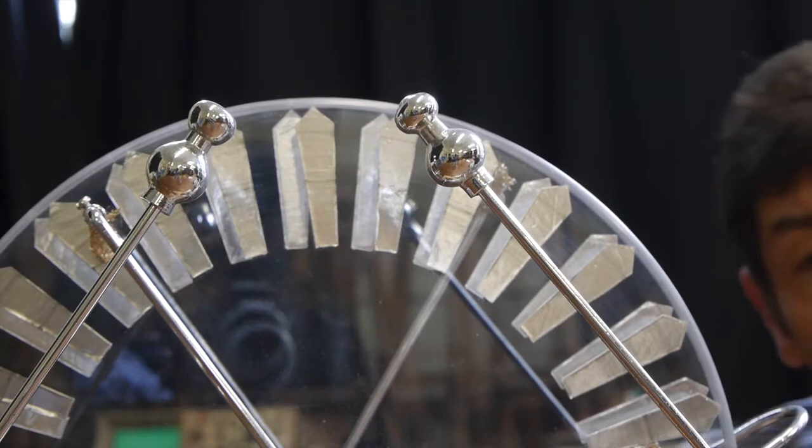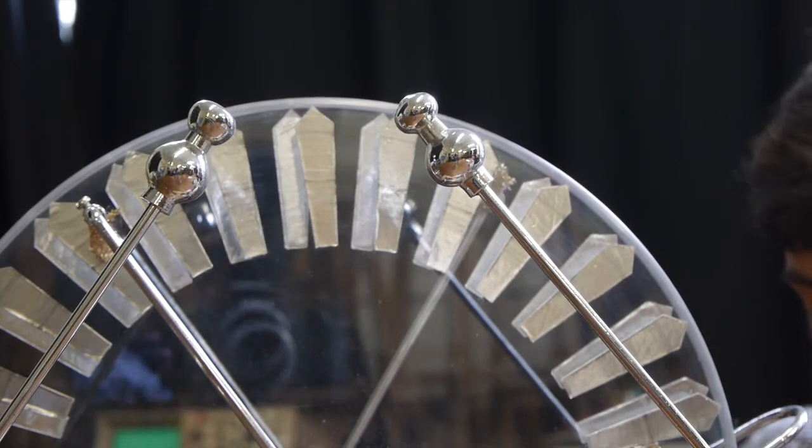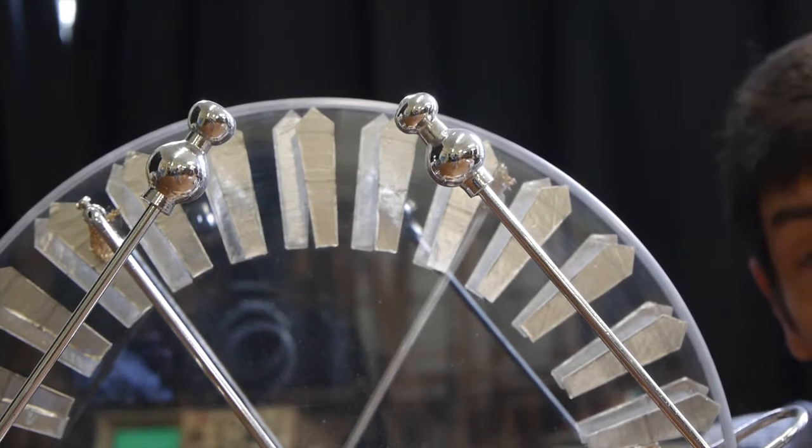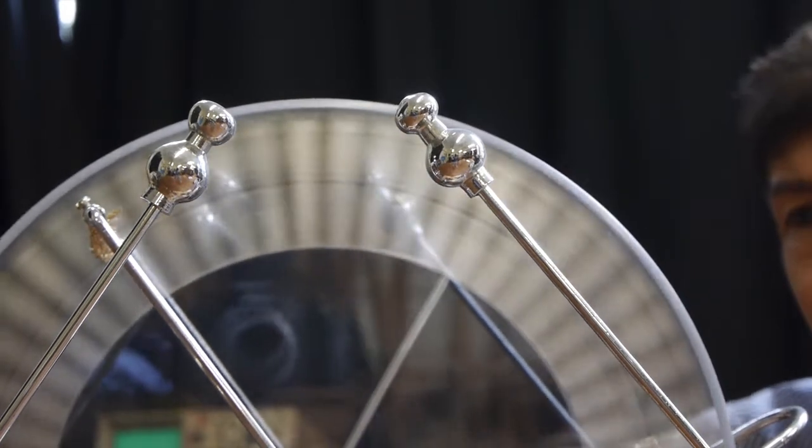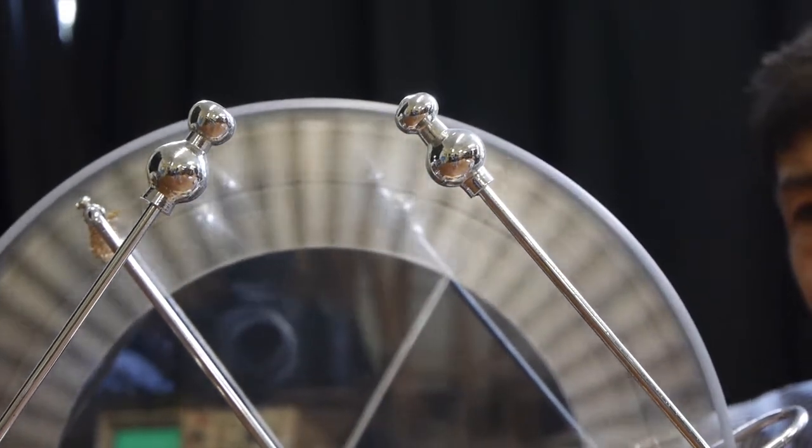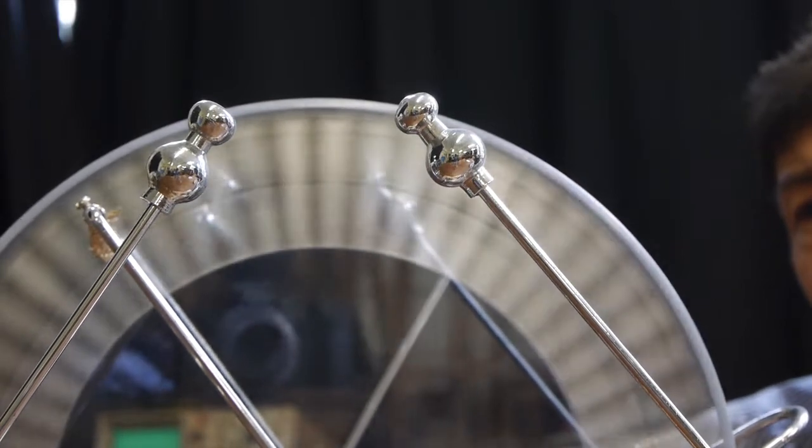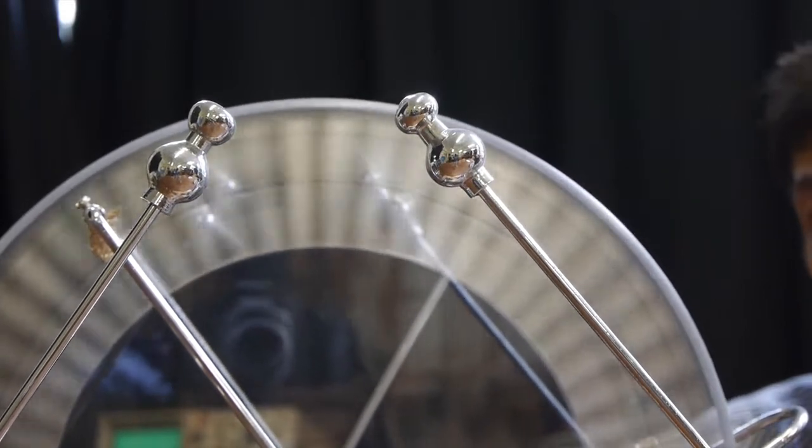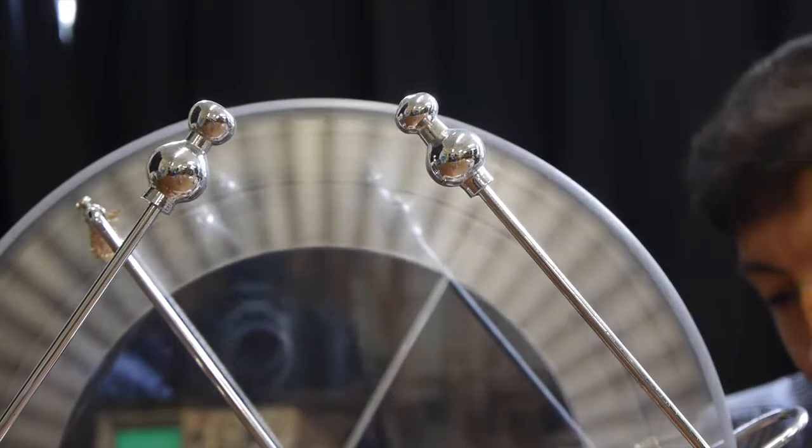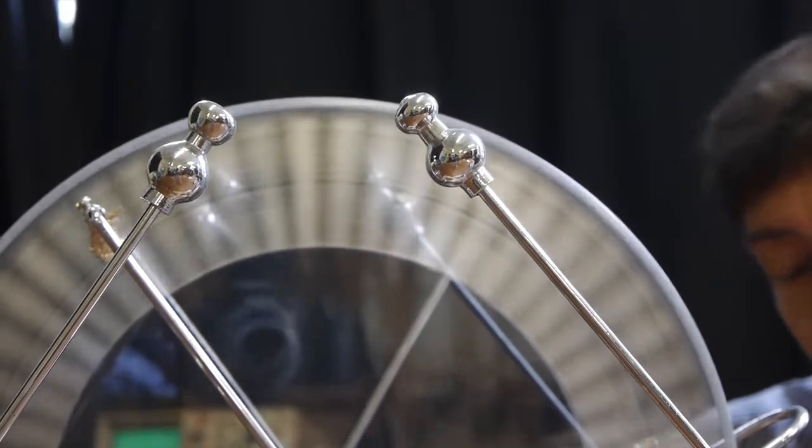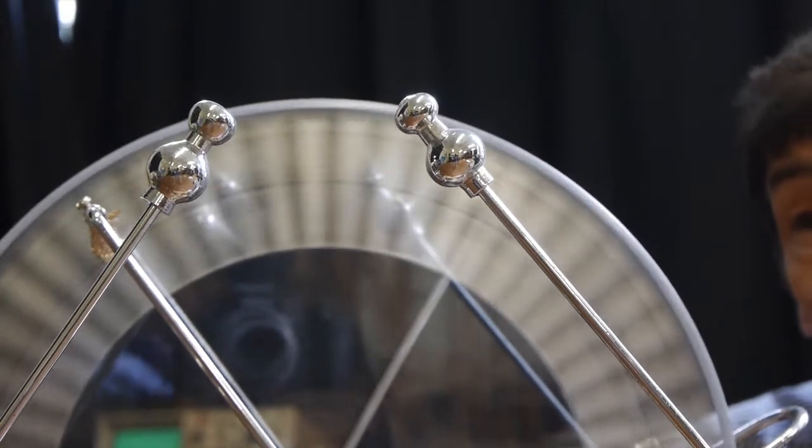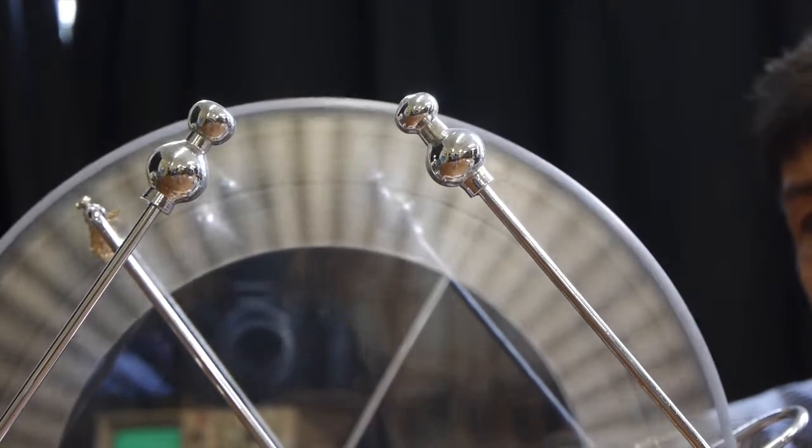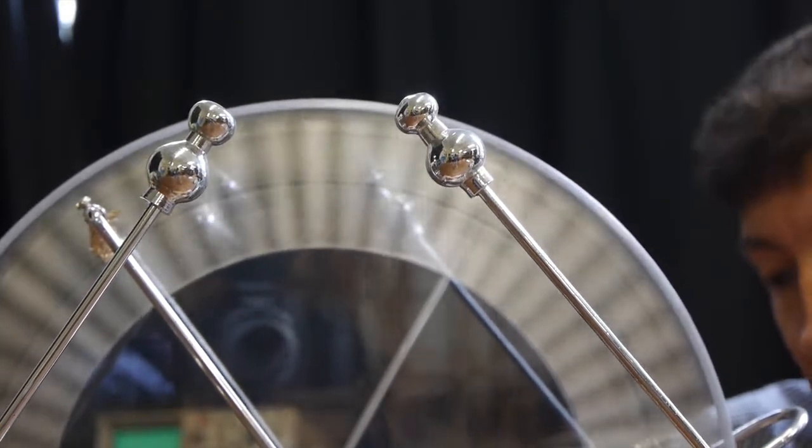So I've opened up the spark gap now to five centimetres. Let's turn the handle and see if we can generate a voltage big enough to ionise air across that gap. There we go. Takes a little time for the charge to build up. But once it's built up, it stores itself in the Leyden jars and then discharges across the gap when the voltage is high enough to ionise the air between those two balls on the top of the spark gap.